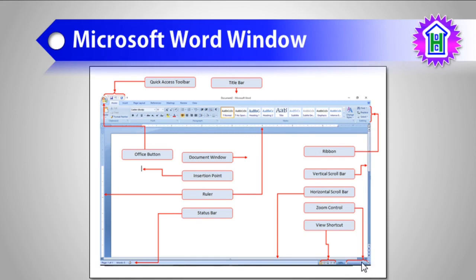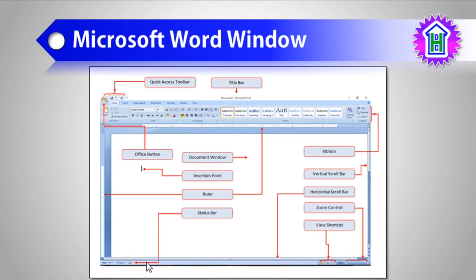At the bottom right corner, we have the zoom control or zoom slider. If we drag that slider, we will be able to enlarge or decrease the view of the document. These are called view buttons or view shortcuts — we can change our document to different views using these buttons. At the bottom, this bar is called the status bar. Remember, view shortcuts and zoom control are both placed in the status bar. The status bar is also used to display the status of the document in terms of the number of pages it has and which page you are currently on.